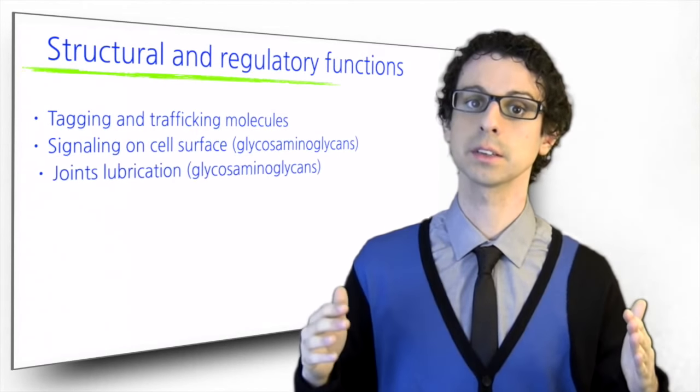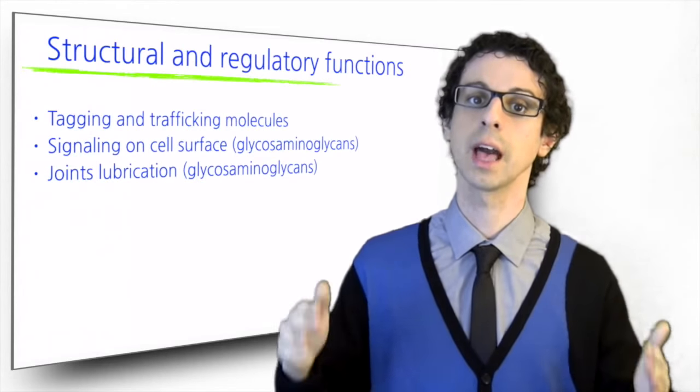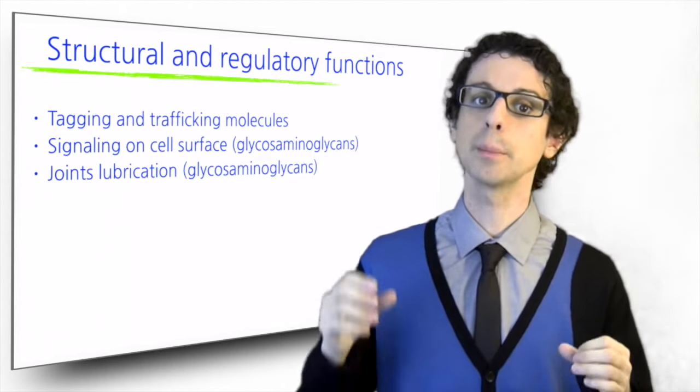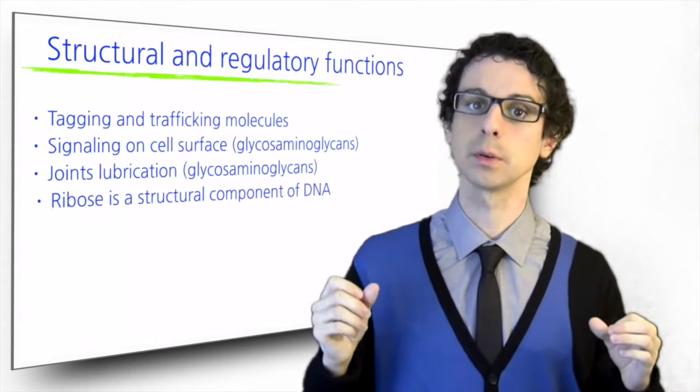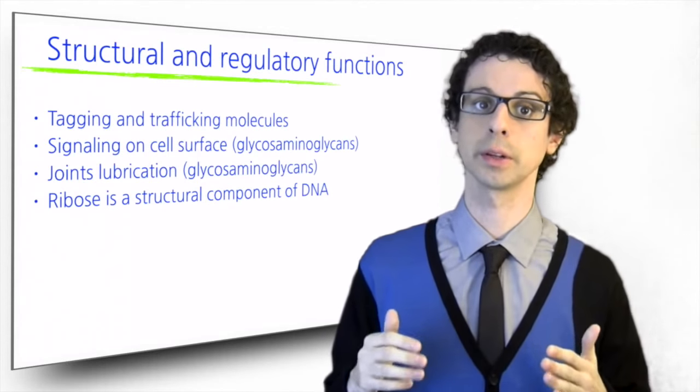Cell surface glycosaminoglycans protect and lubricate our joints and most of our tissues. A particular sugar, ribose, is a key structural component of our DNA.